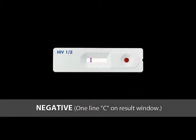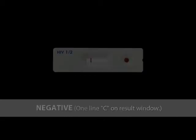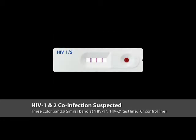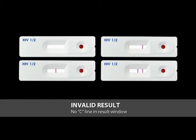Only one line C on the result window means negative. Two color bands on the 1 and C lines, or three color bands on the 1 line, C line, and a faint 2 line, mean HIV type 1 positive. Two color bands on the 2 and C lines, or three color bands on the 2 line, C line, and a faint 1 line, mean HIV type 2 positive. If the 1 and 2 lines are similar, perform a confirmatory test to determine the virus type or diagnose co-infection accurately. If no line appears near the letter C, conduct the test again with a new test device and new disposable capillary pipette.